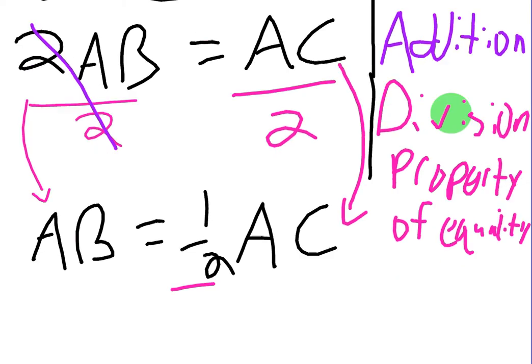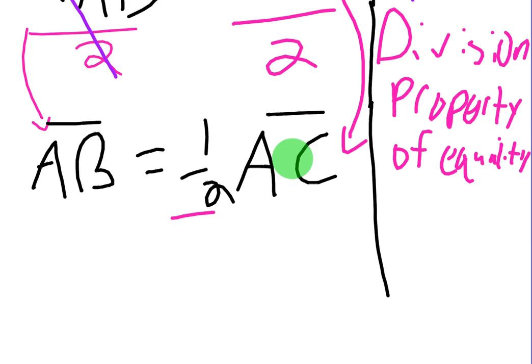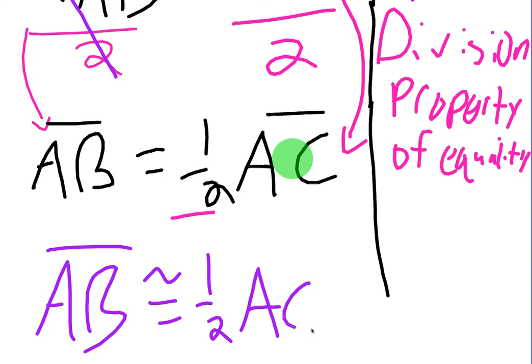Okay, so then we have AB is equal to one half AC. Now, again, you know, sometimes, depending on the proof which you're working on, you want to write it as congruent, because that's what you're trying to prove. So you could say AB is congruent to half of AC, and the reason for that is congruence.